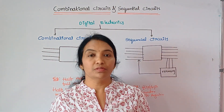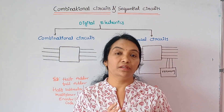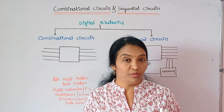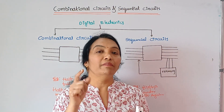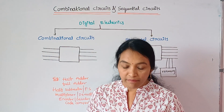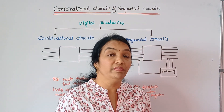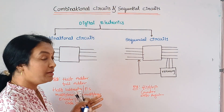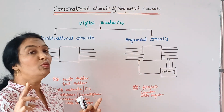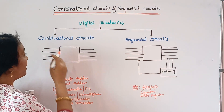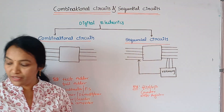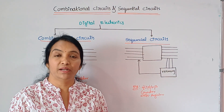The topic is Combinational Circuits and Sequential Circuits. In this video, you can see the difference between the combinational circuit and the sequential circuit. In Digital Electronics, there are two types: one is the combinational circuit and another one is the sequential circuit. I will show you the difference between combination and sequential.